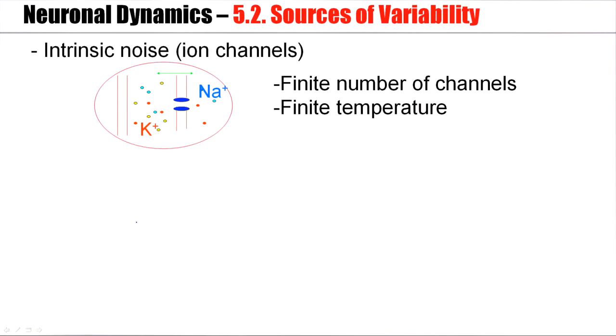And it shows up as fluctuations in the ion current flowing through the set of ion channels. So this is a first noise source. There is a finite number of ion channels that run at finite temperature. This leads to intrinsic noise in the neuron.